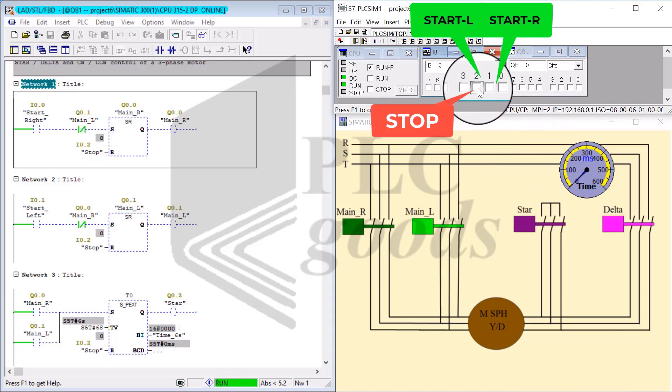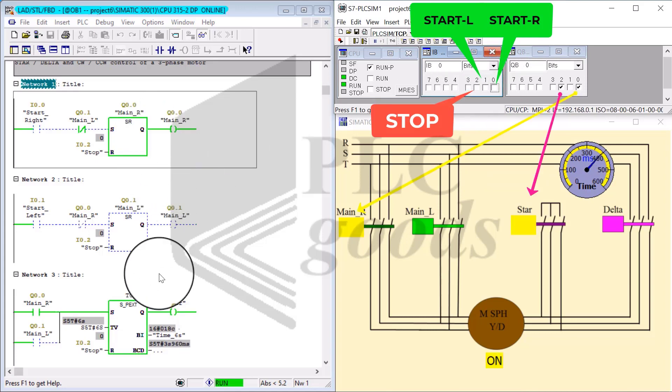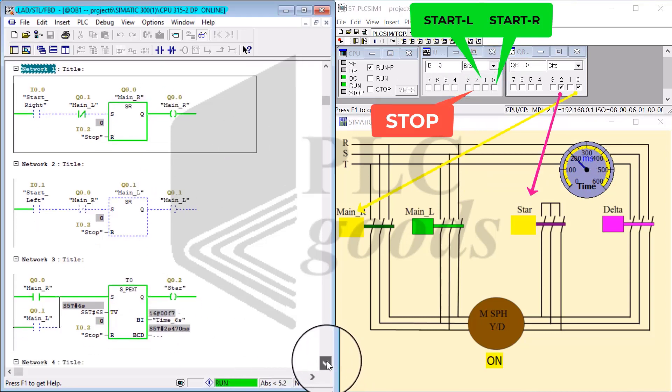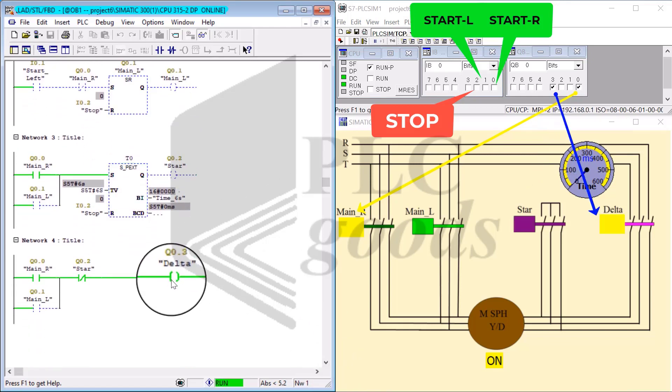I go ahead and stop the circuit again and tap on the start R push button this time. Notice the same process happens: first main R and star, and after six seconds delta contactor kicks in.